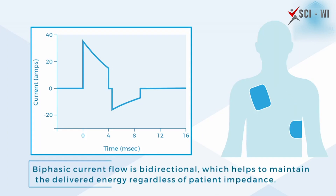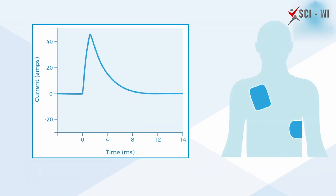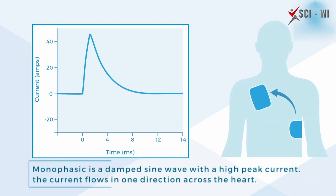There needs to be enough current to reach the heart in order to terminate the rhythm or fibrillation. At the same time, it is necessary to avoid excessively high peak current, which could damage the patient's heart.